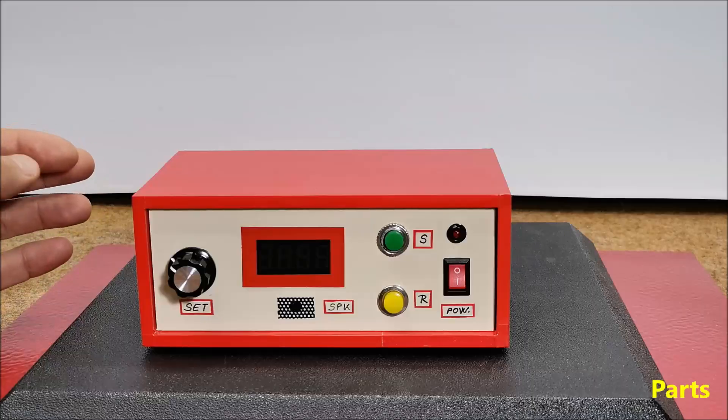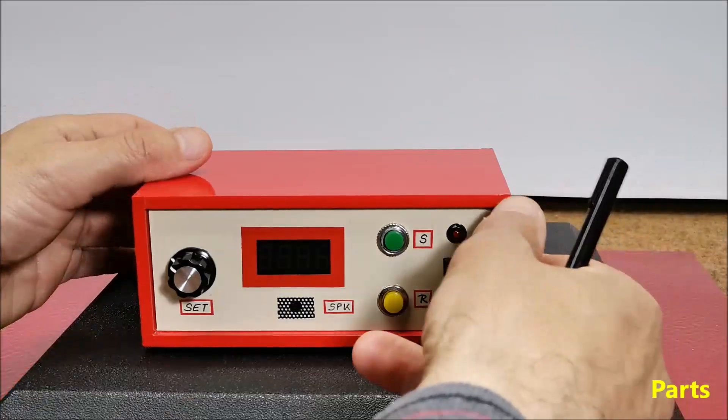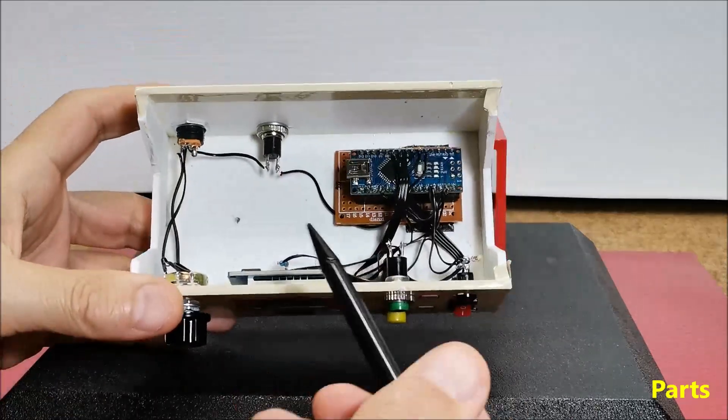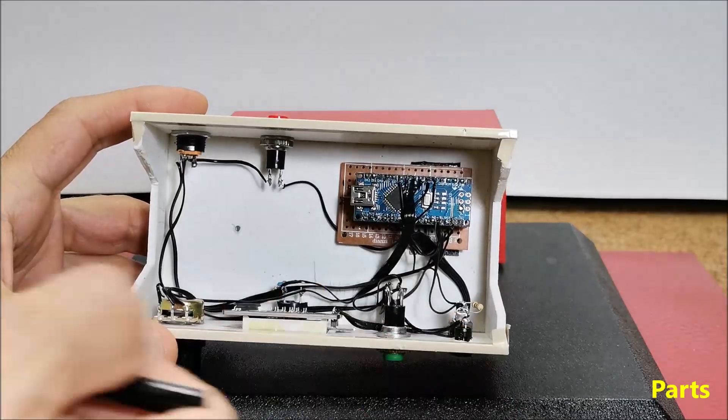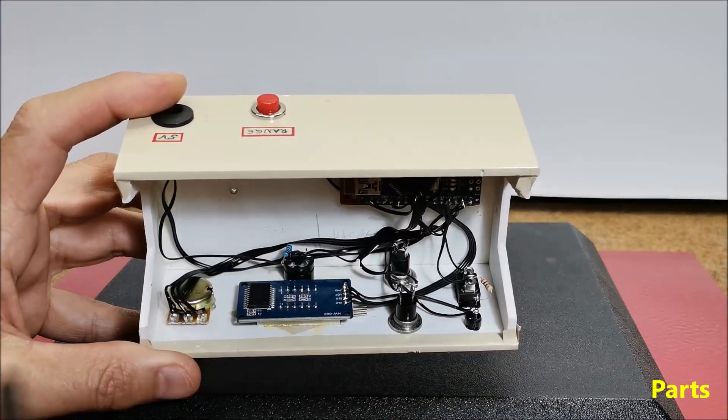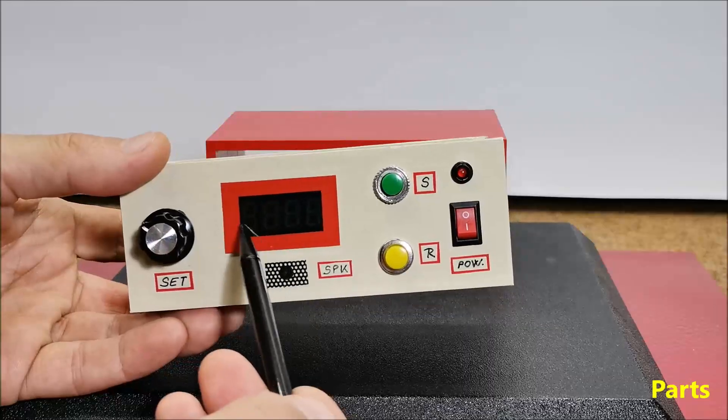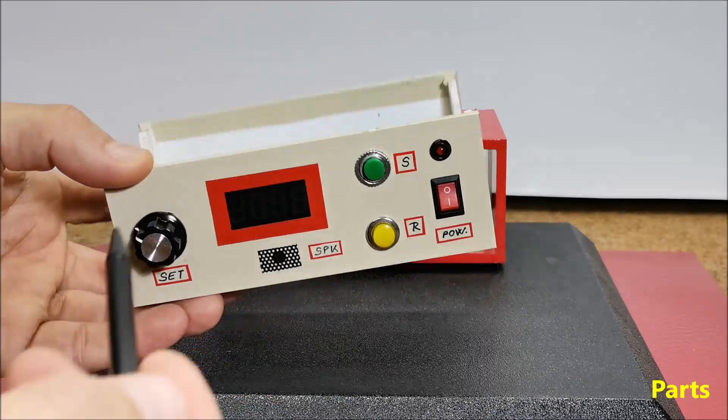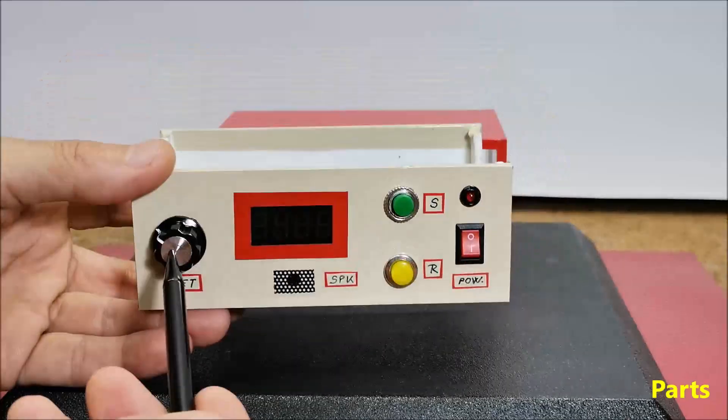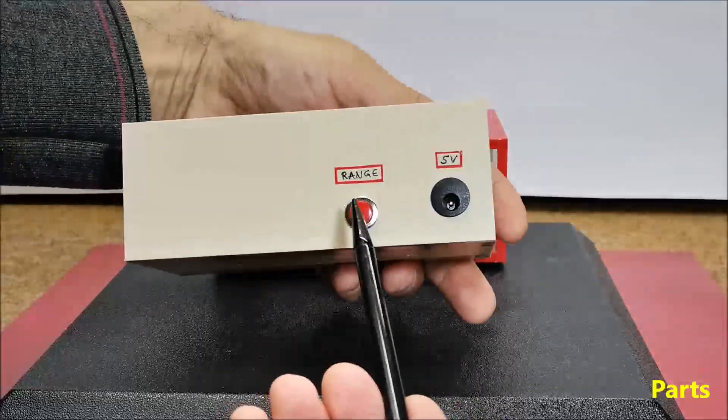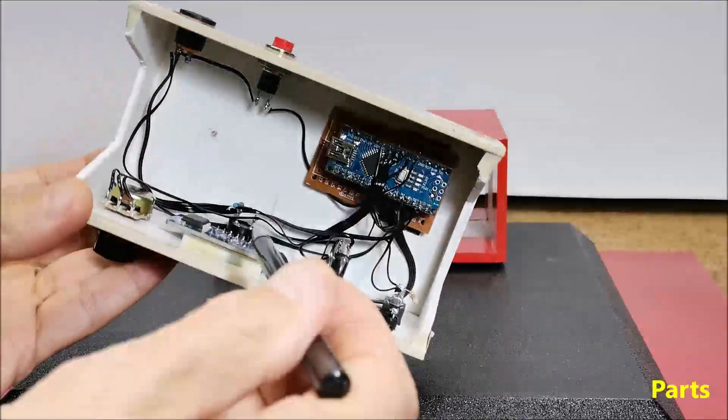To make the device you only need a few components: Arduino Nano microcontroller board, TM1637 4-digit 7-segment LED display, 10 kilohm potentiometer, 3 buttons and a small buzzer.